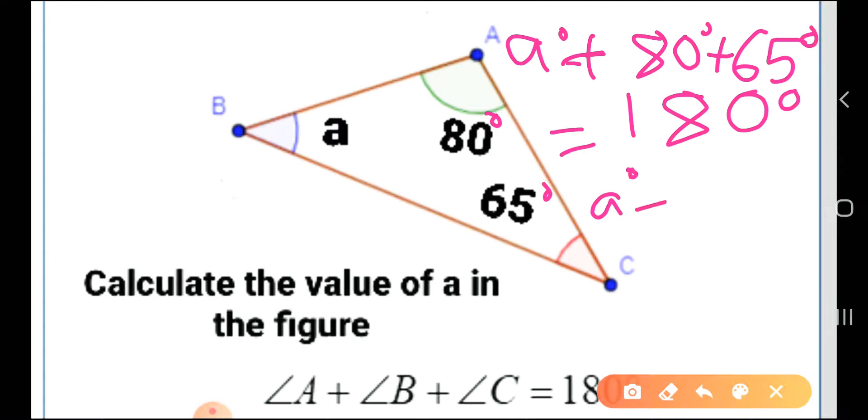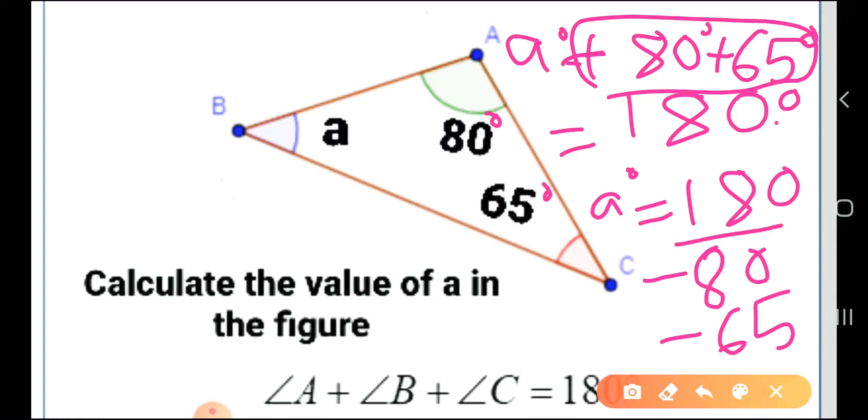...180 minus 80 degrees minus 65 degrees. This is the easy way. 180 minus 80 is 100, and 100 minus 65 is 35 degrees. So that means a equals 35 degrees. The value of a is 35.